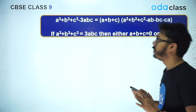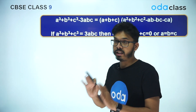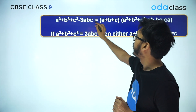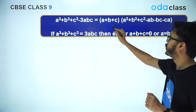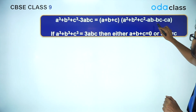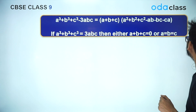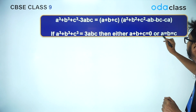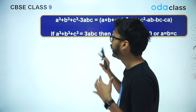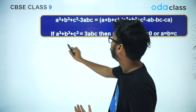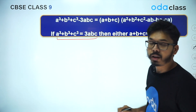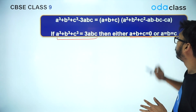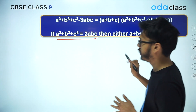You all have done this particular identity in your 9th standard — it's there in NCERT as well. The identity is: a³ + b³ + c³ − 3abc = (a + b + c)(a² + b² + c² − ab − bc − ca). This identity is there in 9th standard but not in detail. Here we're going to discuss the detailed version and also talk about two results: if a³ + b³ + c³ = 3abc, then either a + b + c = 0 or a = b = c.